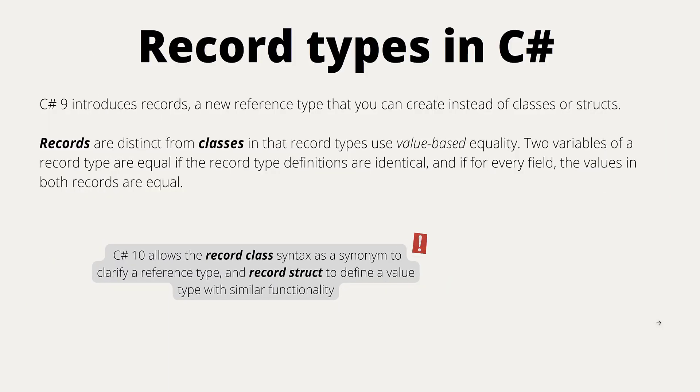C# 9 introduced the record type as a new reference type that can be used to create classes or structs. Record types are distinct from classes in that record types use value-based equality. In class types there is no value-based equality — you have to implement equality yourself. Two variables of a record type are equal if the record type definitions are identical and if every field value in both records are equal.